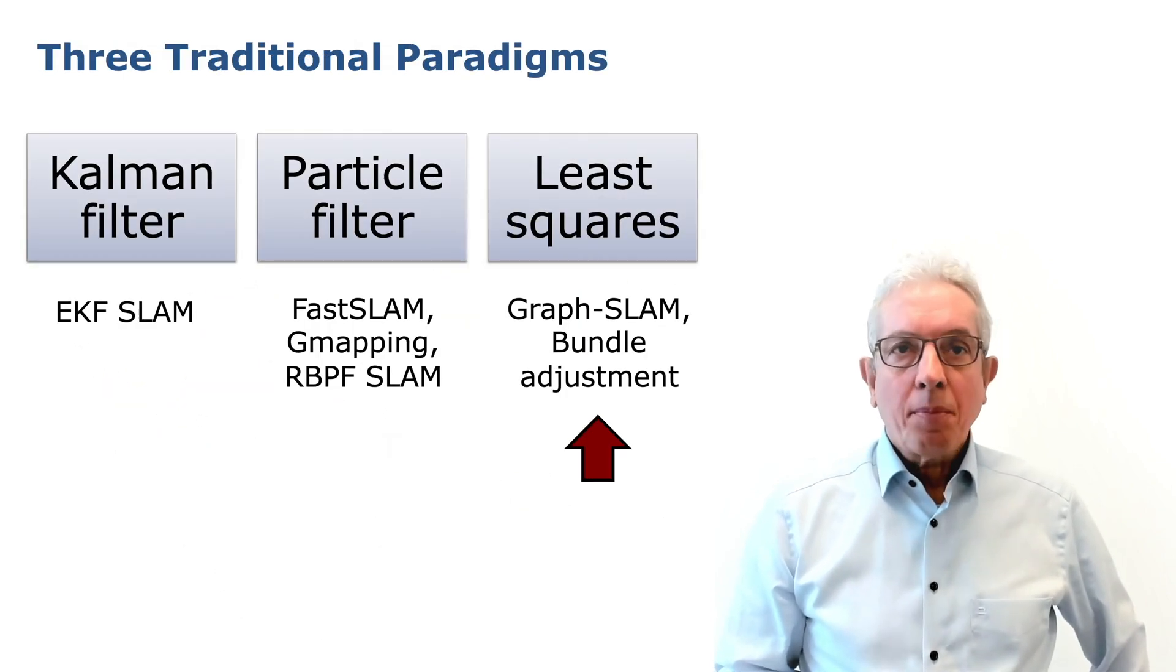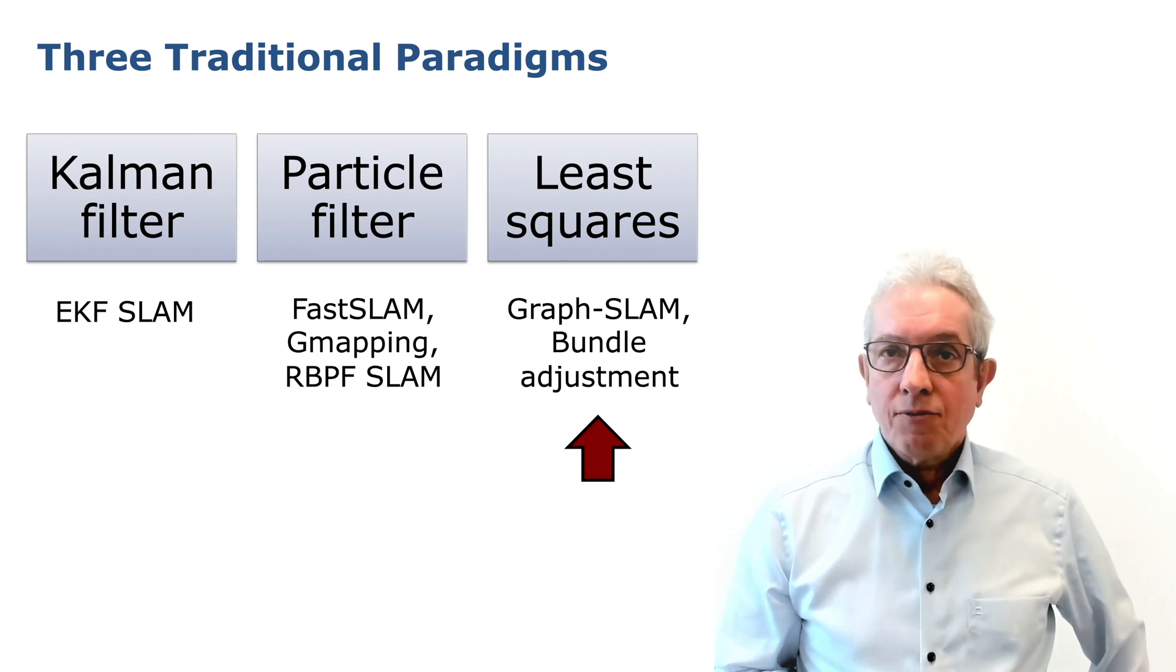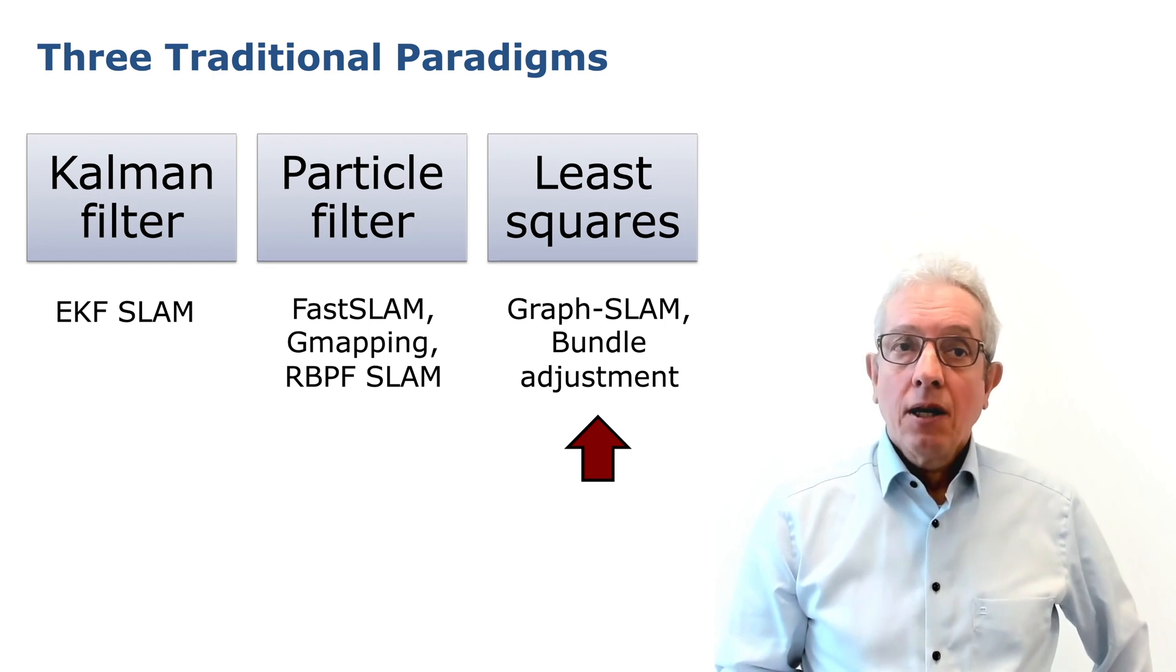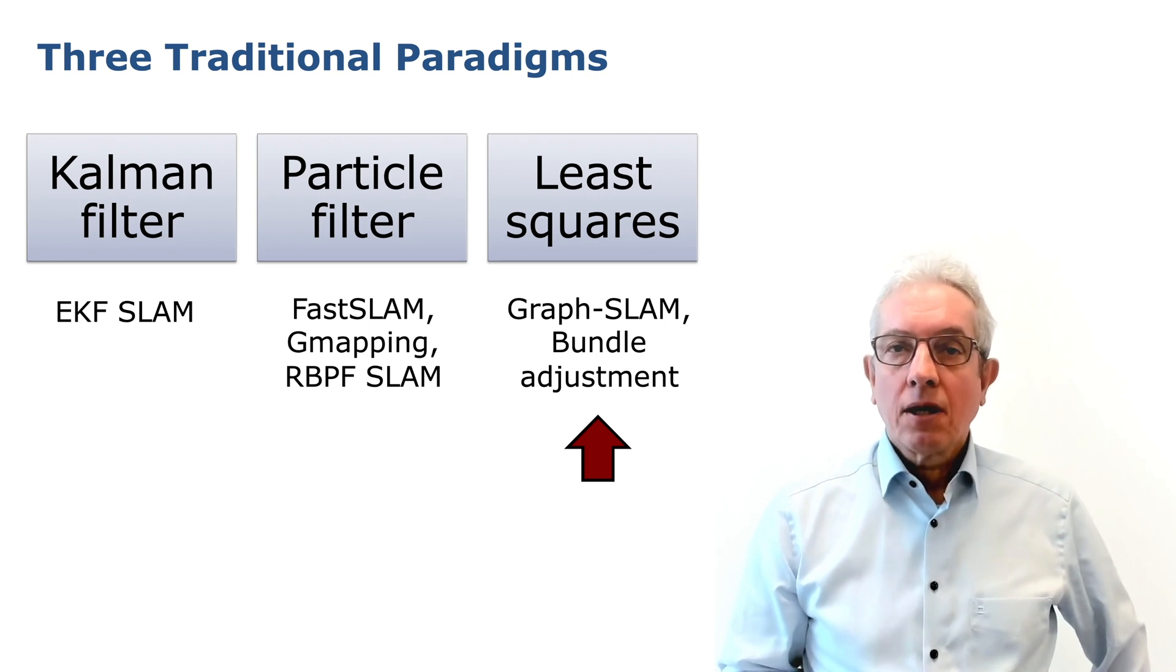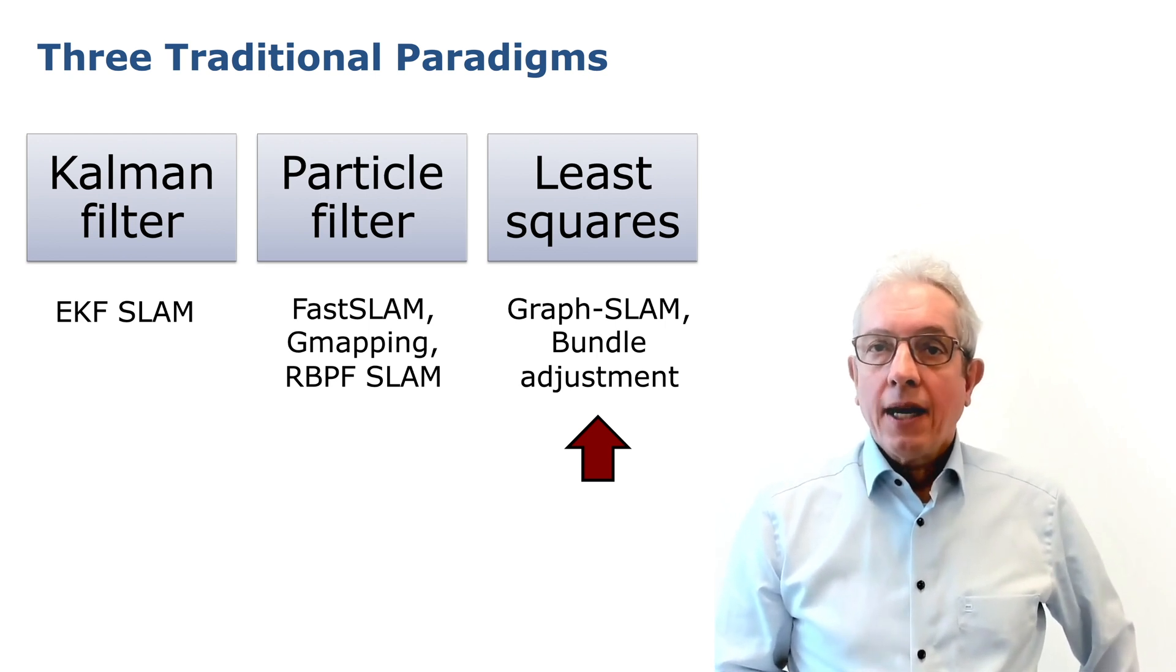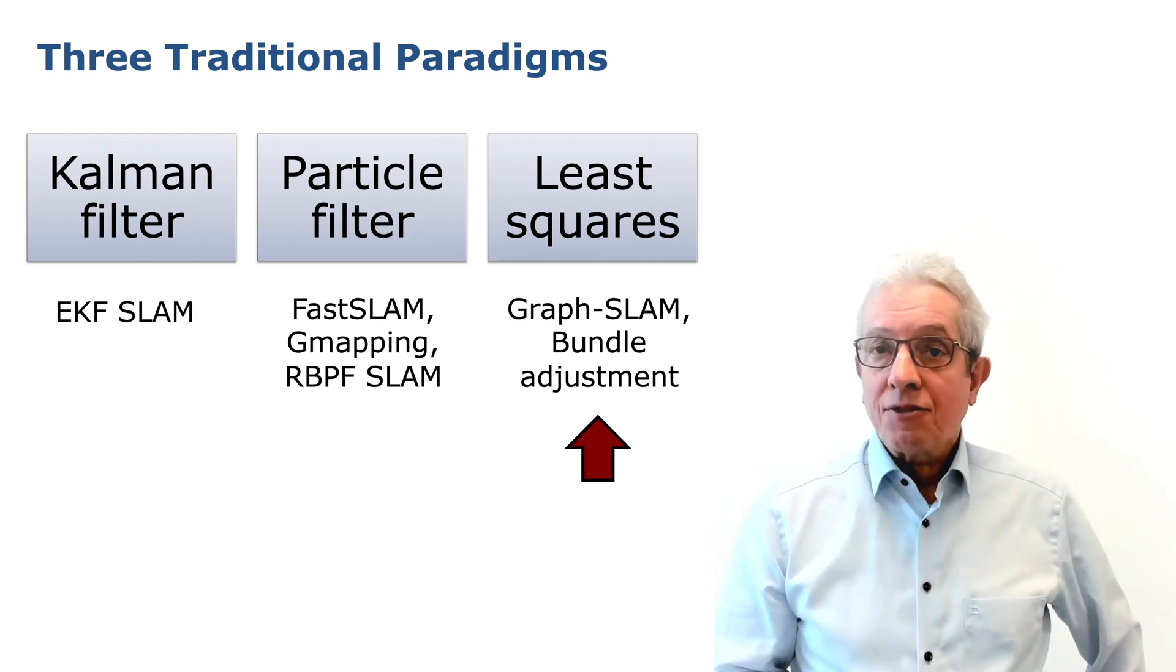There are three traditional paradigms for SLAM. The first one being the common filter type of approaches, with the extended Kalman filter being the most predominant solution. The second one are approaches based on particle filters or Monte Carlo localization, which are FastSLAM, GMapping, and Rao-Blackwellized particle filters. The third approach are the so-called least squares methods, with graph SLAM as a predominant solution or bundle adjustment.